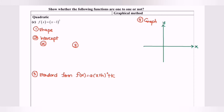Step number one: refer to the function and determine the shape. For this case, it is in standard form a(x + h)² + k. By referring to the function, a is equal to 1. Since a is greater than 0, the shape will be a U-shape.